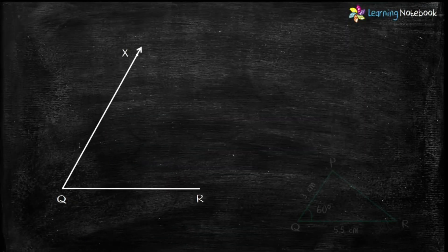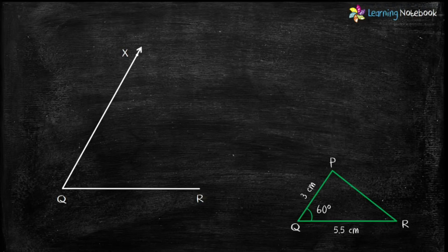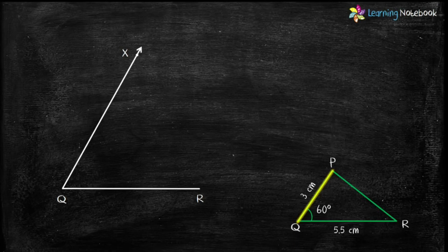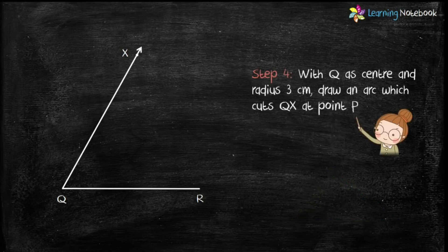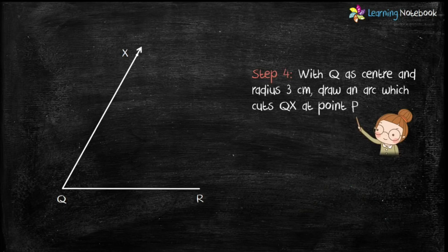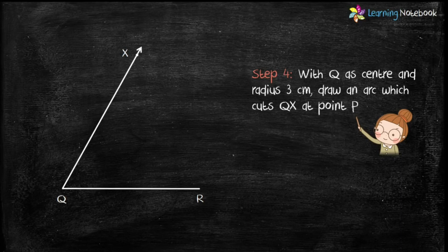Now, look at the rough sketch. From point Q, P is at the distance of 3 cm. Therefore, step 4 is, with Q as center and radius 3 cm, draw an arc which cuts QX at point P.